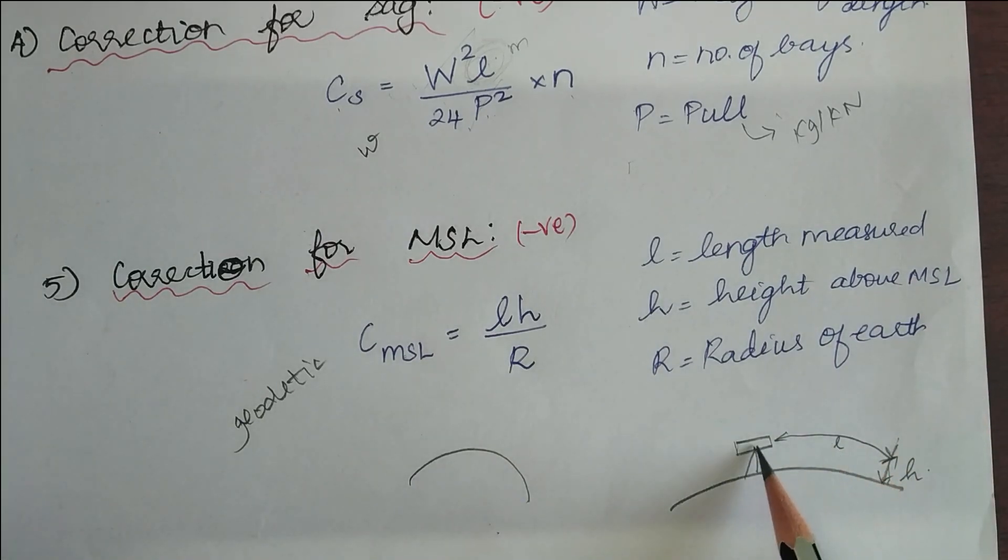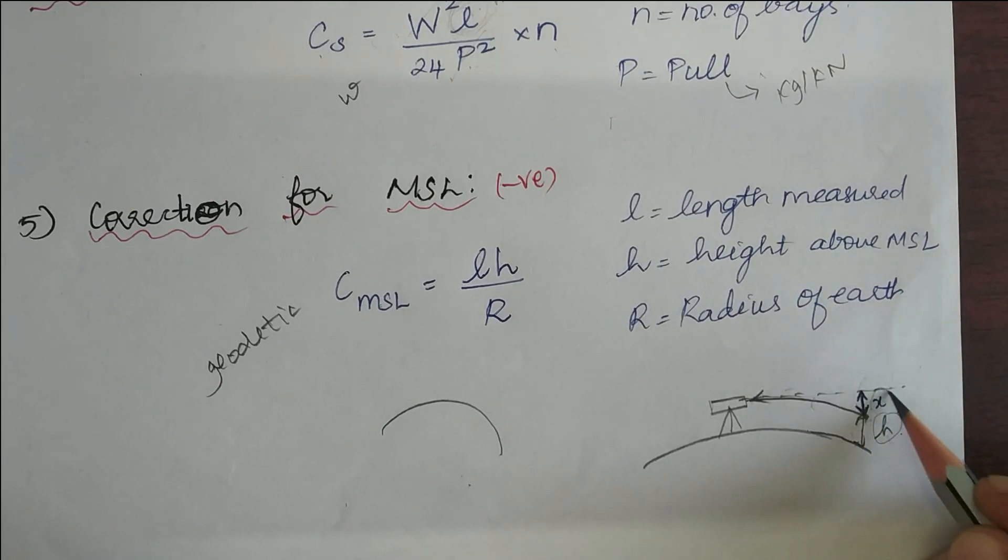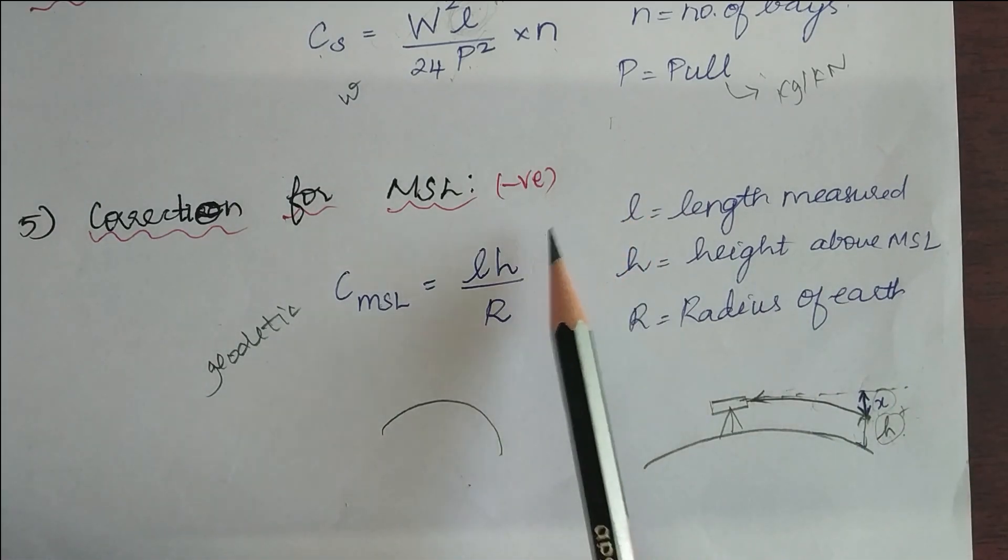But the line of sight for my theodolite or anything is going to be horizontal. But the answer that we will get is going to be the original height plus x, because our line of sight will coincide only with the height corresponding to x. So in that case, we have to get the correct MSL.